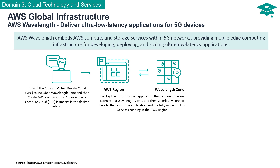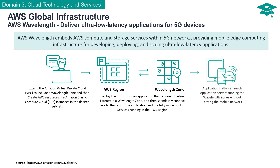By deploying the segments of an application that demand ultra-low latency within a Wavelength Zone, AWS Wavelength allows these ultra-responsive components to connect seamlessly back to the broader application and the complete suite of cloud services operating within the AWS region. Your application traffic can effortlessly reach the application servers residing within Wavelength Zones without leaving the confines of the mobile network — a high-speed ecosystem designed for the most demanding low-latency applications.